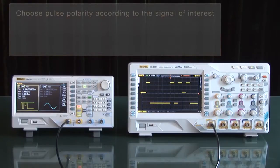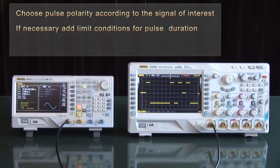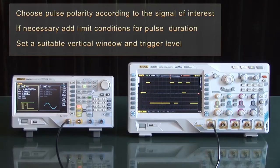You want to choose pulse polarity according to the signal of interest. If necessary, add limit conditions for your pulse duration, and then set a suitable vertical window and trigger level. Thank you.